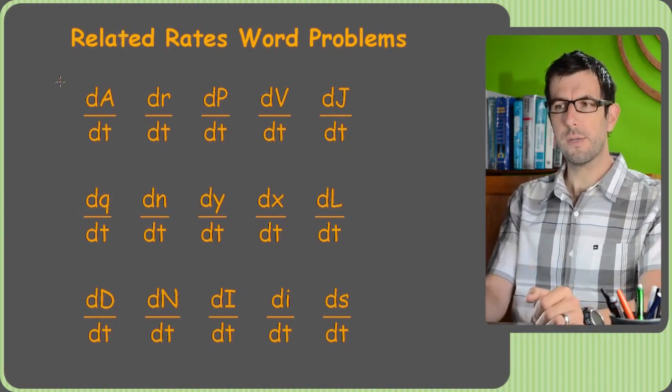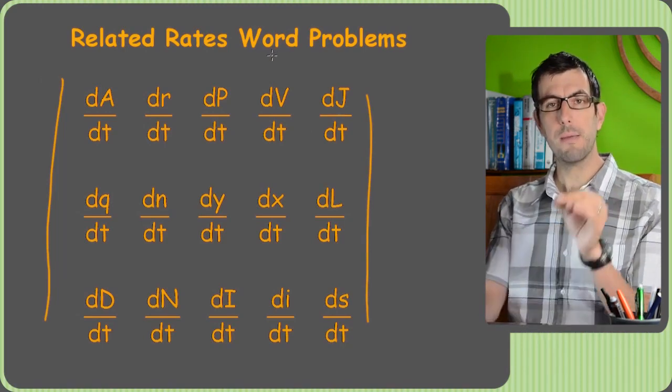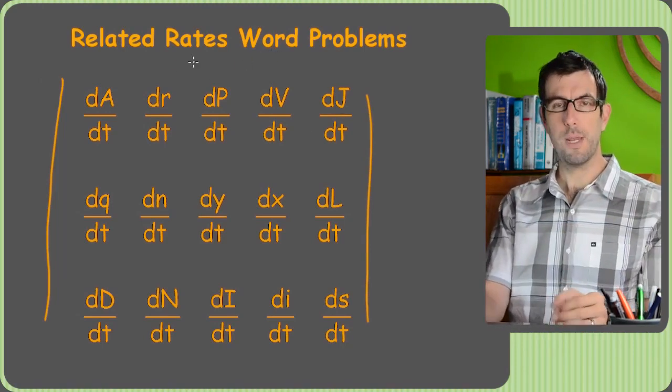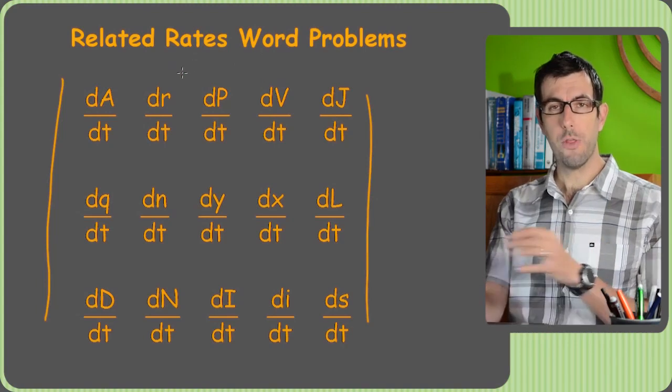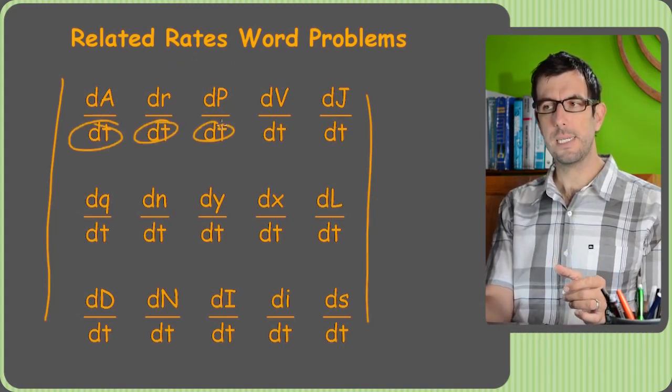The reason I put this incredible block of letters here is to point out and just drill home the thing I'm going to keep drilling, which is that whenever you're doing a related rates problem, all the derivatives have a dt downstairs. dt, dt, dt, dt, dt.